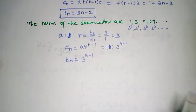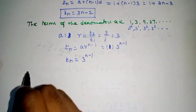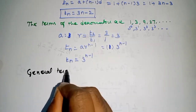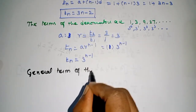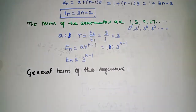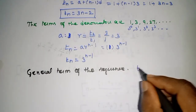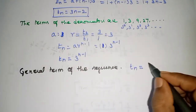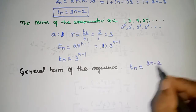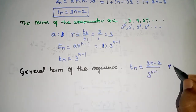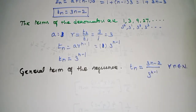So the general term of the given sequence is: Tn = (3n - 2) / 3^(n-1), for all n belonging to natural numbers.